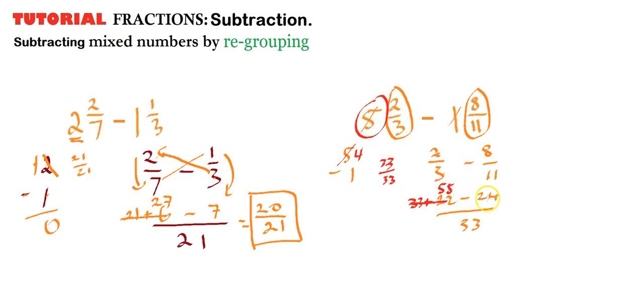And now it's 55 minus 24. So 55 minus 24, we can do that quite easily. It's 31. So the answer is 31, 33.